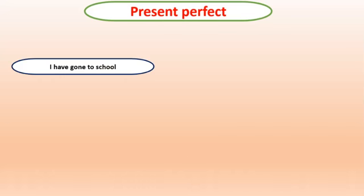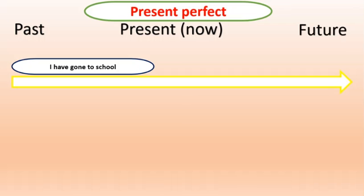Now, for present perfect simple, we have the sentence 'I have gone to school.' We have a timeline: past, present, future. Your sentence starts in the past — 'I have gone to school' — and it's relevant in the present, but the action is not ongoing. It has happened in the past and it finished before your present.